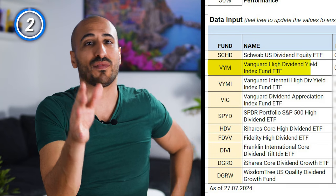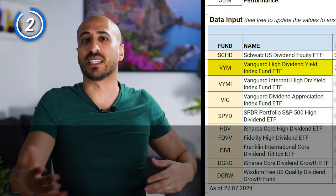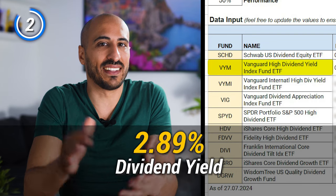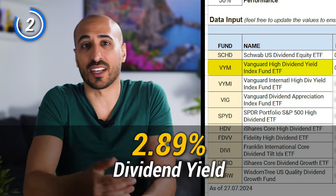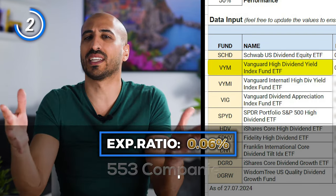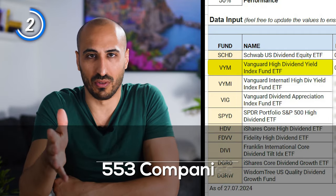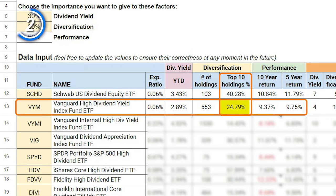The second ETF is VYM, the Vanguard High Dividend Yield ETF. VYM has a dividend yield of 2.89% and an expense ratio of 0.06%, like SCHD, but a quite diversified portfolio of 553 holdings. The top 10 weigh 24.79% of the portfolio and the average annual return has been 9.73% in the last 10 years and 9.75% in the last 5.